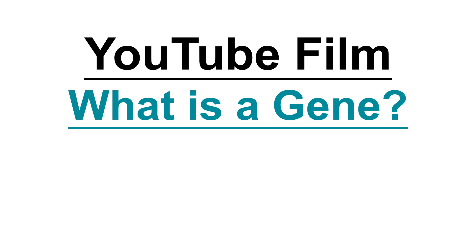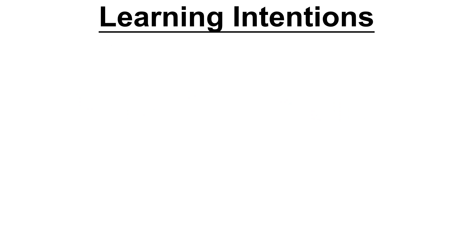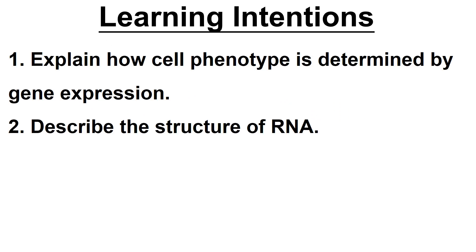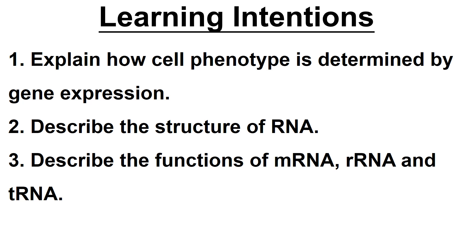This part of the course is called gene expression. Before we get into the nuts and bolts of it, there's a good video — search YouTube for 'What is a gene' and watch that. You might remember the word phenotype from National 5. Phenotype is basically what the cell's function is, what it does, how it's specialised. You want to be able to explain how cell phenotype is determined by gene expression, describe the structure of RNA. We talked about mRNA at National 5, but there are actually three types: mRNA, rRNA, and tRNA. You need to be able to describe the functions of each of them.